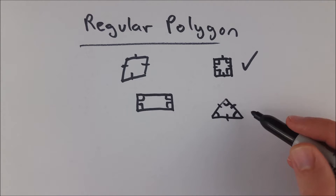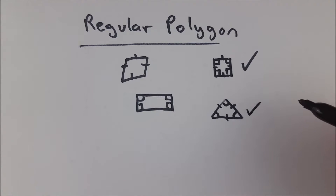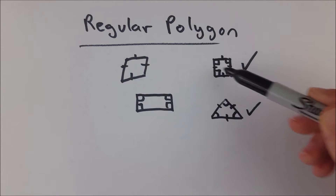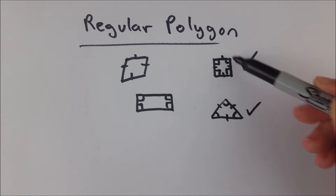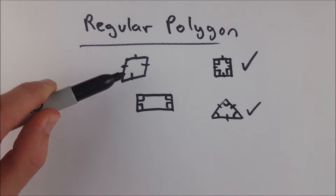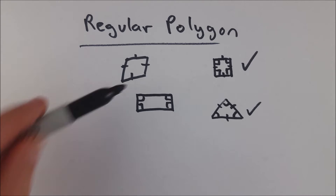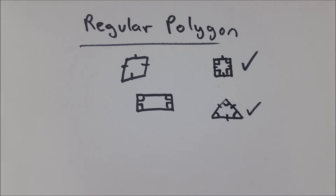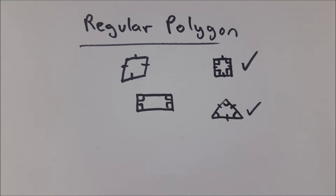This is a regular square, which doesn't really mean much because there's no such thing as an irregular square, but it's a regular polygon because again it's equilateral — all of its sides are congruent — and it's equiangular, all of its angles are congruent. This diamond rhombus only has congruent sides, not congruent angles, so it's not a regular polygon. And this rectangle only has congruent angles but not congruent sides, so it is also not a regular polygon.